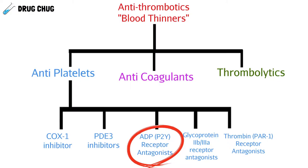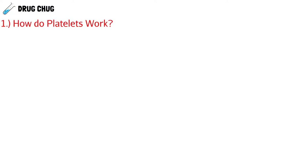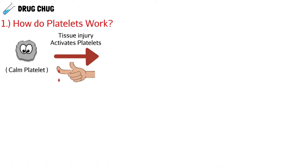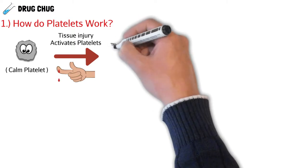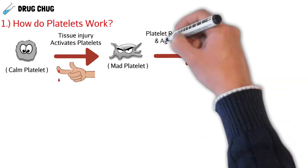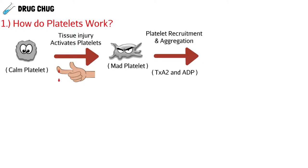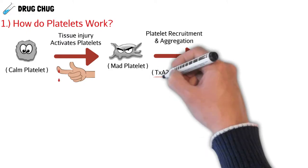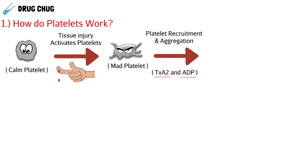To know how clopidogrel and the ADP P2Y12 receptor antagonists work, we need to know how platelets work in general. A calm platelet circulates the bloodstream and doesn't really do anything until we get a cut or damage in our vascular tissue. That calm platelet senses the damage and becomes an activated platelet. At this point we have platelet recruitment and aggregation — more and more platelets coming together — and the cell mediators signaling this are thromboxane A2 and ADP.